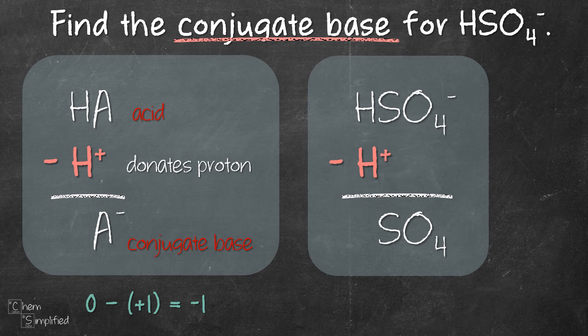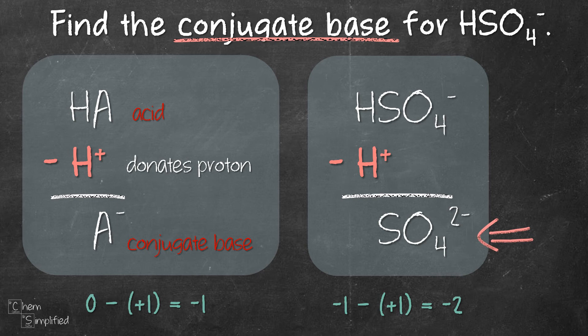As for the charge, so we have -1 minus +1 that gives us -2. So our conjugate base for HSO4- is SO4 2-.